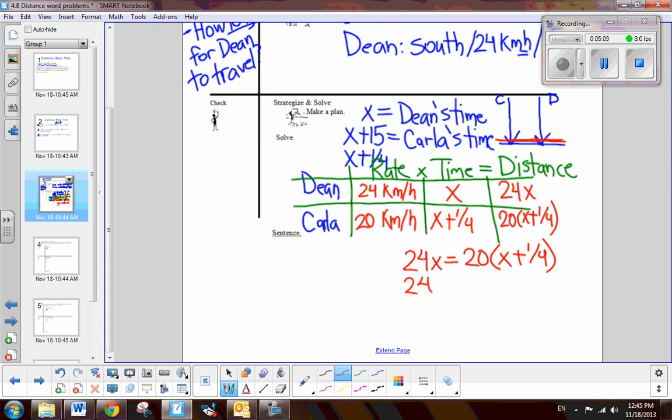Well, we know how to do this. You can see that we're applying our skills of multiplying a monomial times a binomial. And then, we subtract 20X. So, we end up with 4X is equal to 5. So, the answer is 5 fourths, or 1 and 1 fourth. Now, before I put a box around it, I have to look again. What was the question? The question is, how long did Dean travel? Well, we have to write that answer in the sentence.